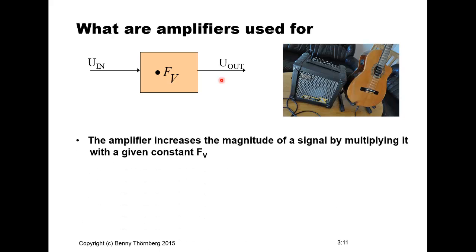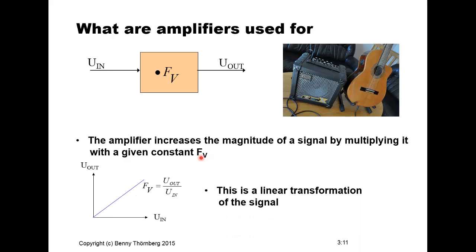The amplifier increases the magnitude of the signal by multiplying the input signal with a constant FV. This transformation is a linear transformation in the ideal case, such that we have almost perfect linearity between the input level of signals and the output level of signals.